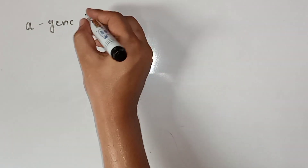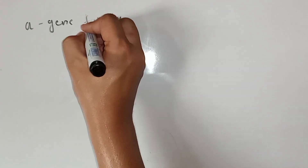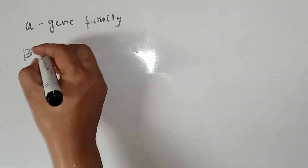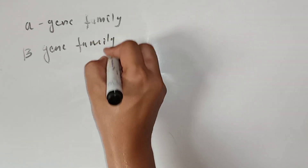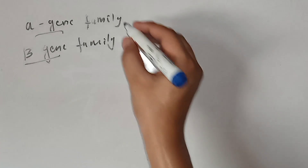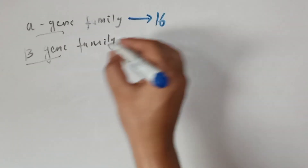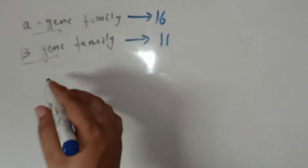In this video we are going to discuss the globin genes, which include the alpha gene family, which codes for alpha globulin chains, and the beta gene family, which codes for beta globulin chains. The alpha gene family is located on chromosome number 16, while the beta gene family is located on chromosome number 11.